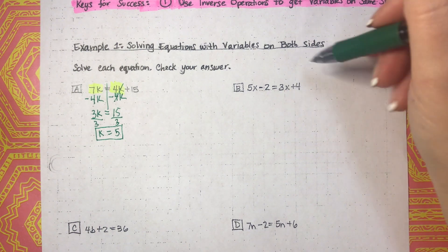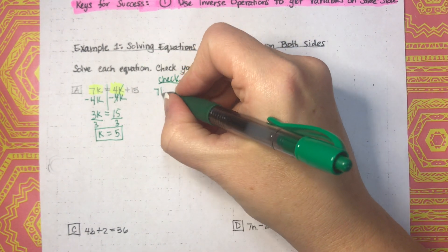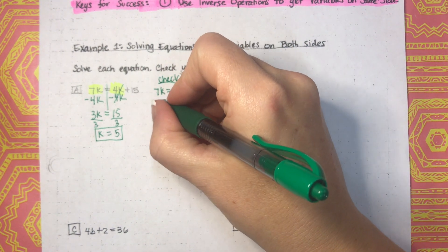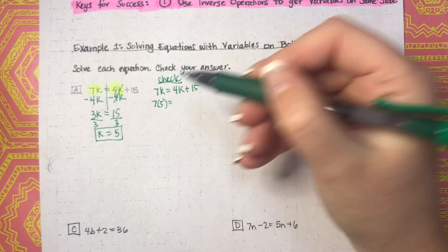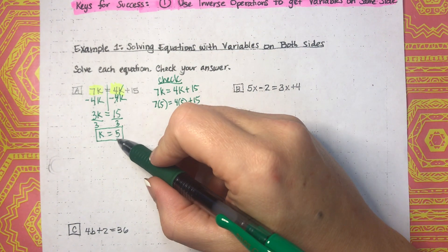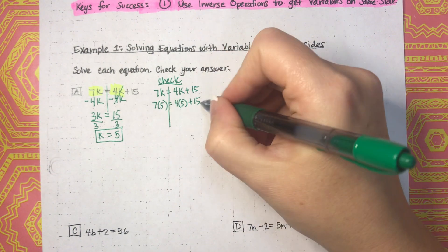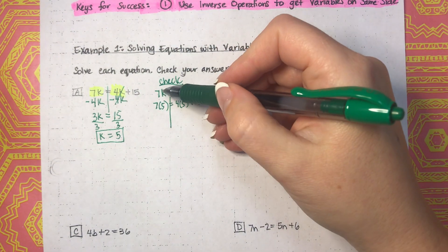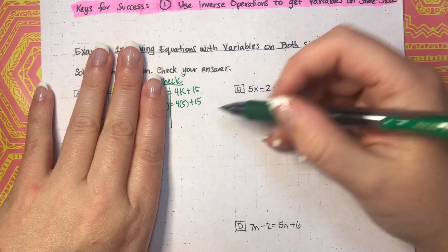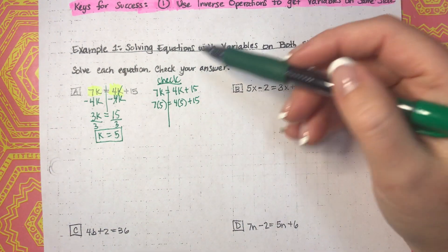We need to check our answer. We write the word 'check' and write the original equation just as it is: 7k equals 4k plus 15. Then we substitute 5 in for k in both places — 7 times 5 equals 4 times 5 plus 15. At this point we use order of operations. We don't move things from side to side during the check — we work each side independently. Solve the left side, solve the right side, and hopefully they both equal the same number. If they equal different numbers, something went wrong and we need to find the error.